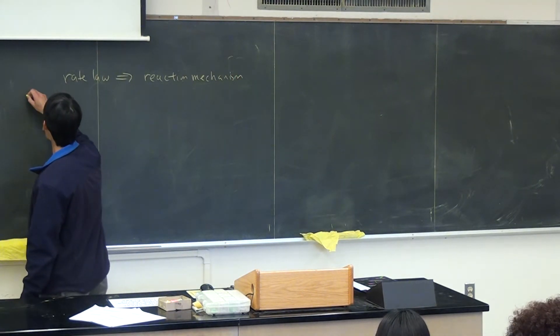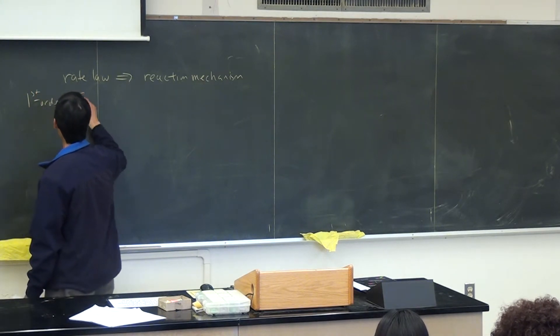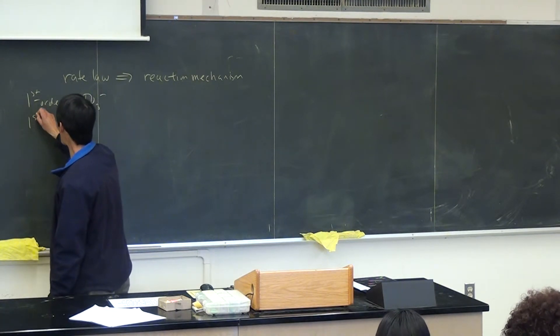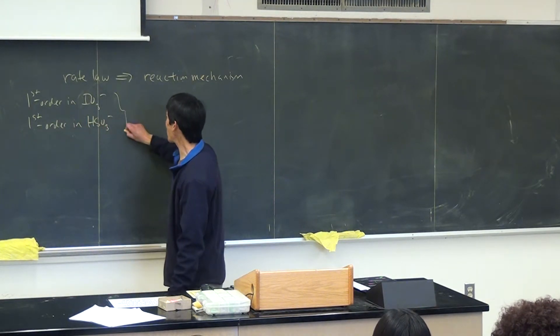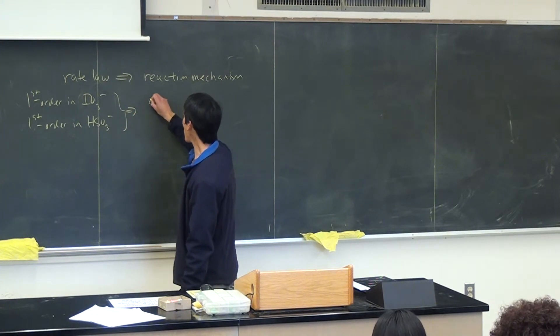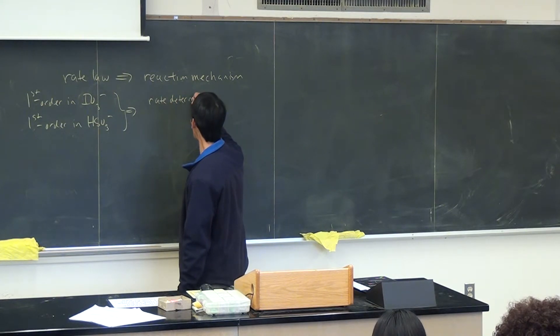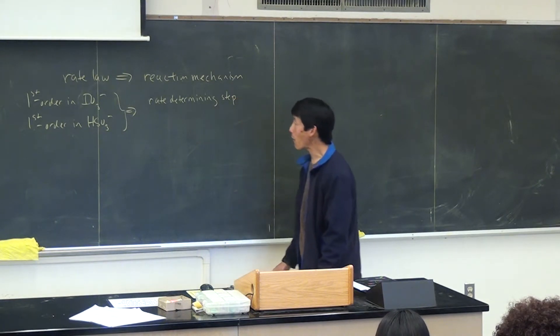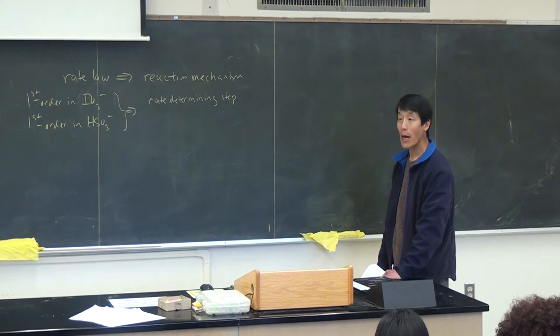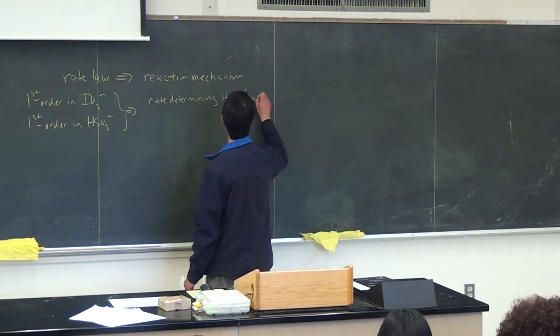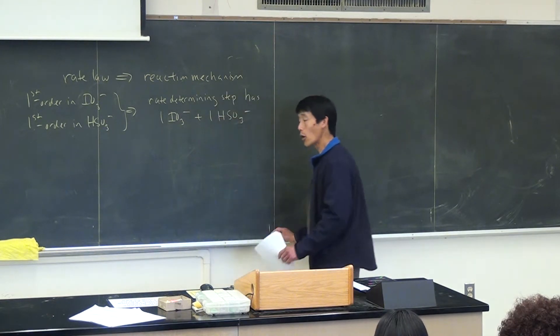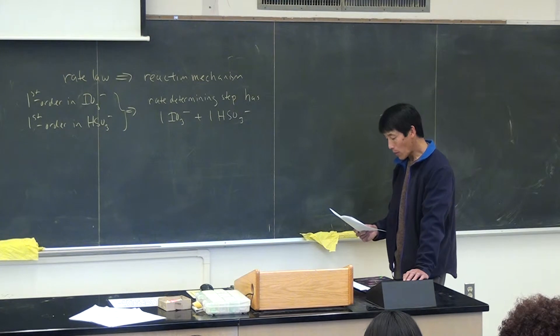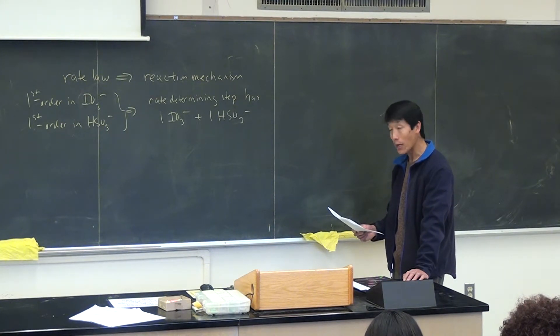So in this case here, note that the rate law of the iodine clock reaction is first order in IO3 minus, and first order in HSO3 minus. This tells us that in the reaction mechanism that the rate determining step has to have one IO3 minus and one HSO3 minus in it.